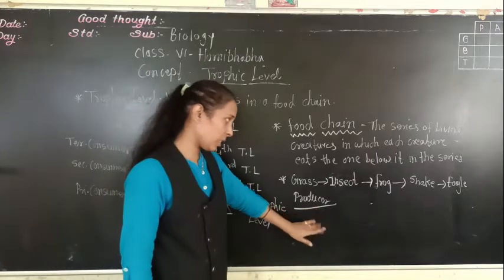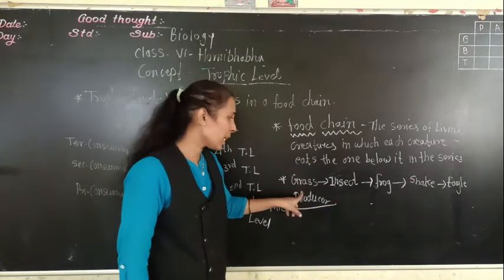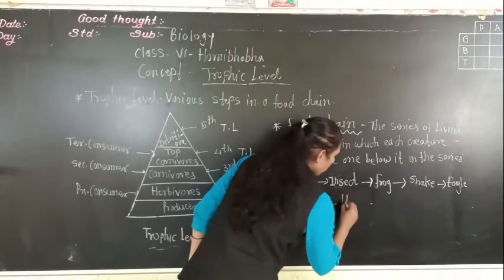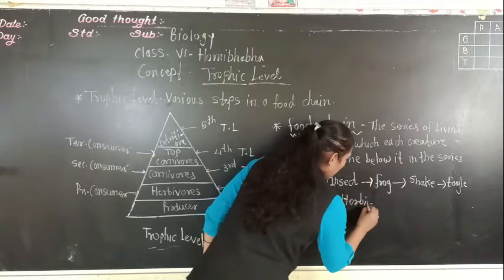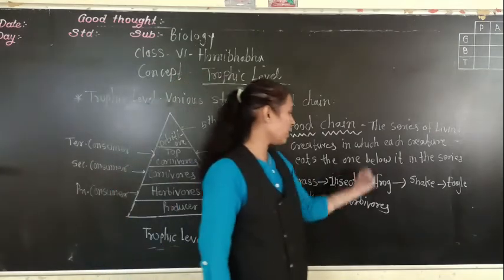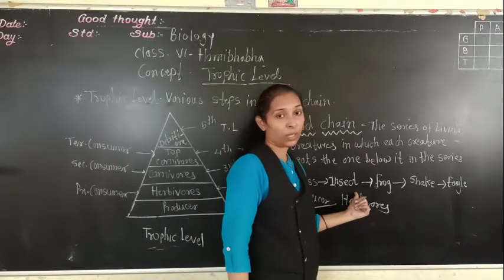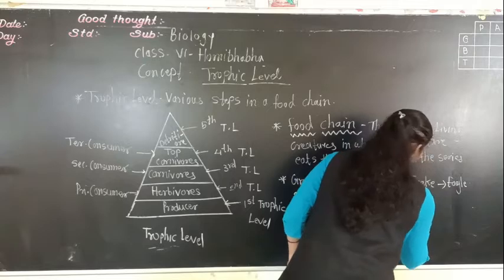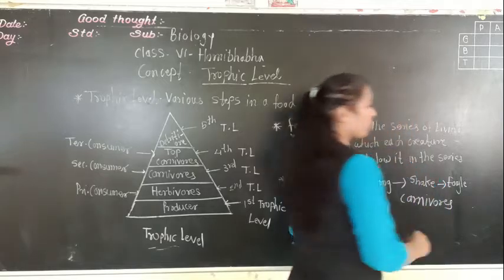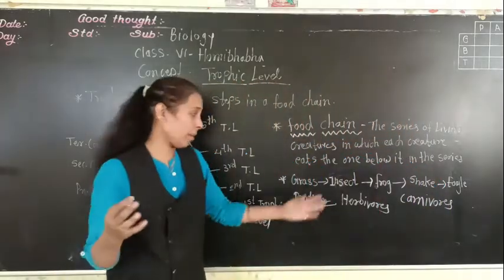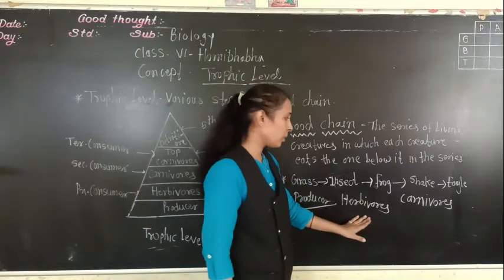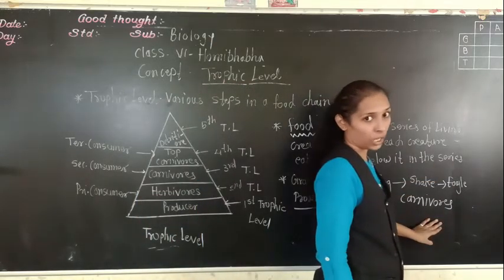So grass is the producer. Insects - what is the food of the insect? That is grass. And the animals that eat the grass, they are called herbivores. After that the animals which eat the herbivores, those animals are called carnivores. All these words are not new for you - you had an idea about all these words. So these are the producers. Insects are herbivores, and the frogs, snakes and eagles are the carnivores.